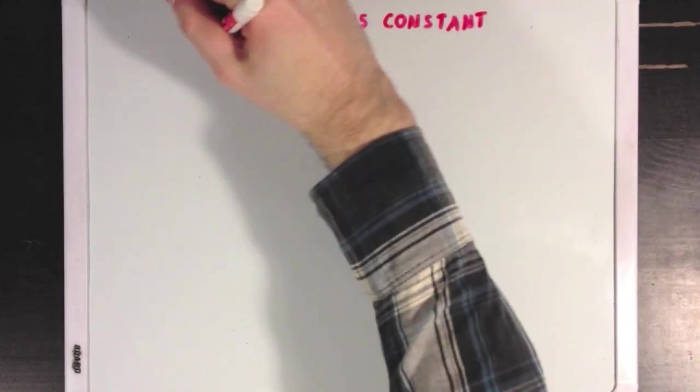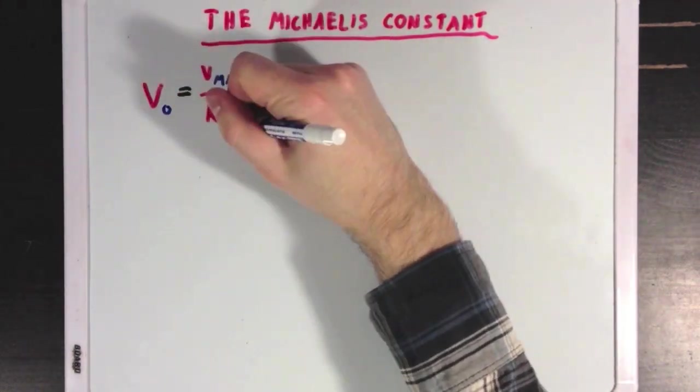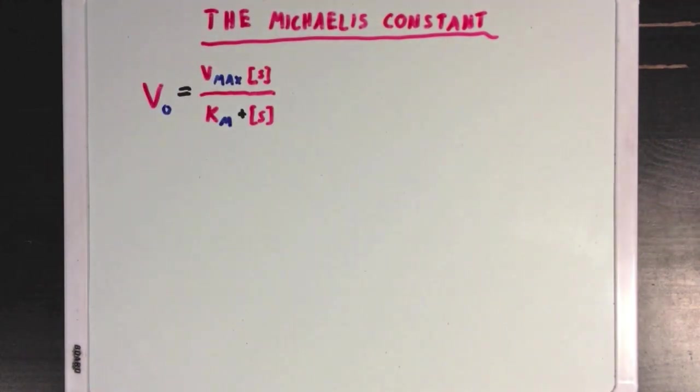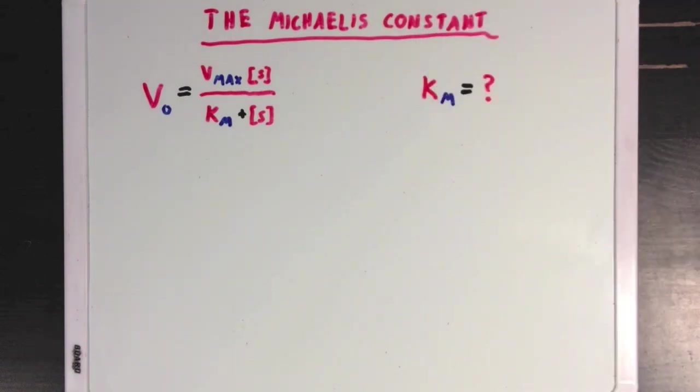So let's take a few steps back and talk about the Michaelis constant. So first I'll write out the Michaelis-Menten equation, and if you remember we created this new term which I called Km, but we never really talked about what it meant, so let's get to that.